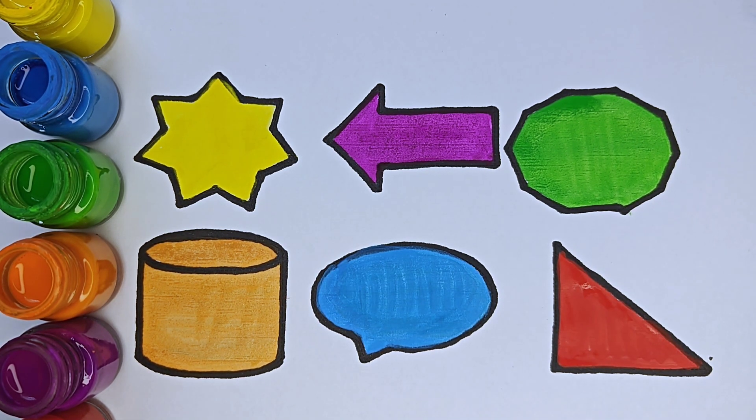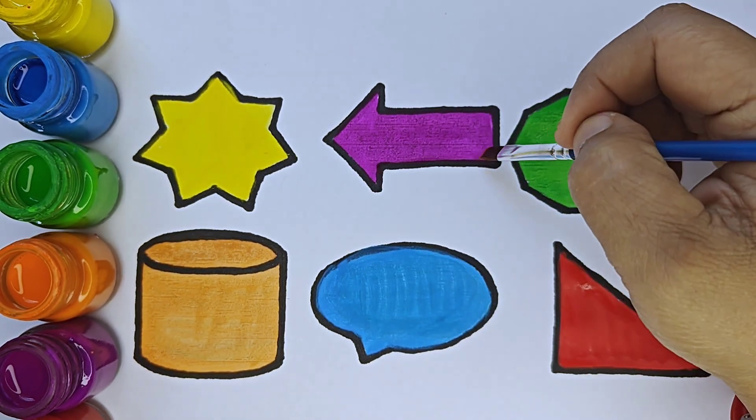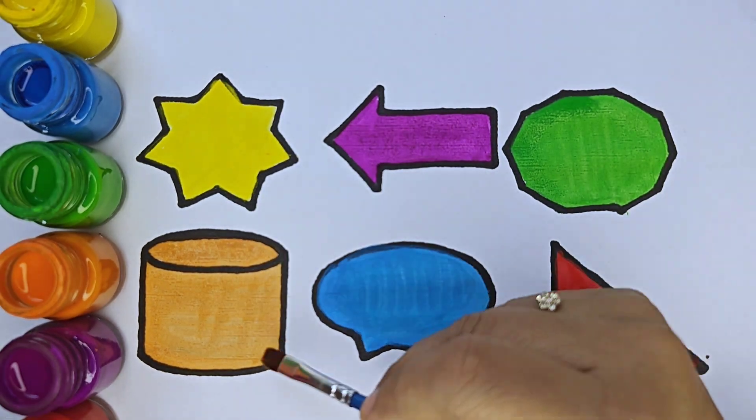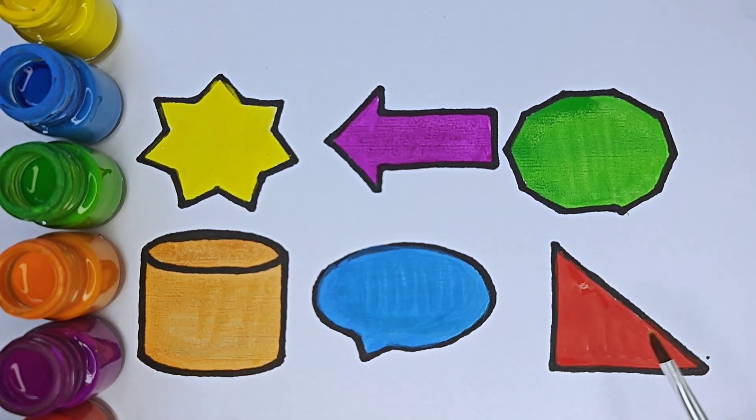Let us recall the shapes and color names once again. This is 7 pointed star, yellow color. Left arrow, purple color. Decagon, green color. Cylinder, orange color. Oval callout, blue color. Right angled triangle, red color.